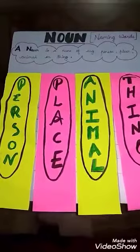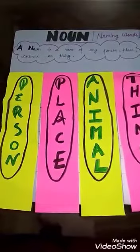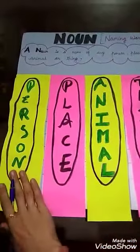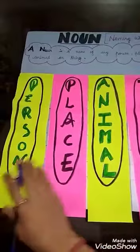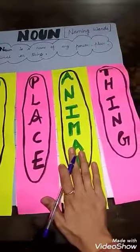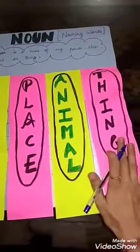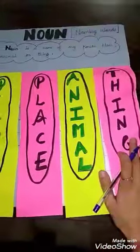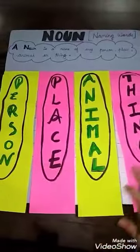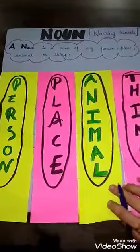But usse pehle hum revise karenge. Noun is a name of a person — insan, place — jaga, animal — janver, thing. Cheez ke naam ko hum noun kehte hain. Ye chaar cheez hain jo hum ko yaad rakhni hain.